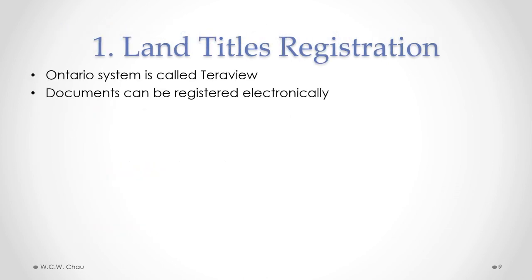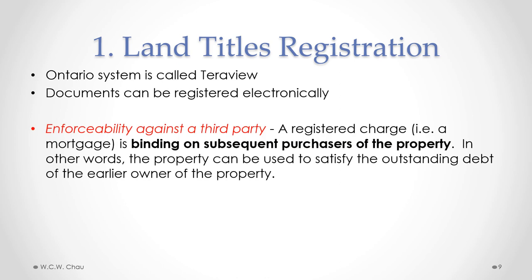The land titles registration in Ontario is called Terraview — it's an electronic database where documents related to interests in real estate are registered, including transfers of title or ownership. Mortgages are also registered on Terraview.